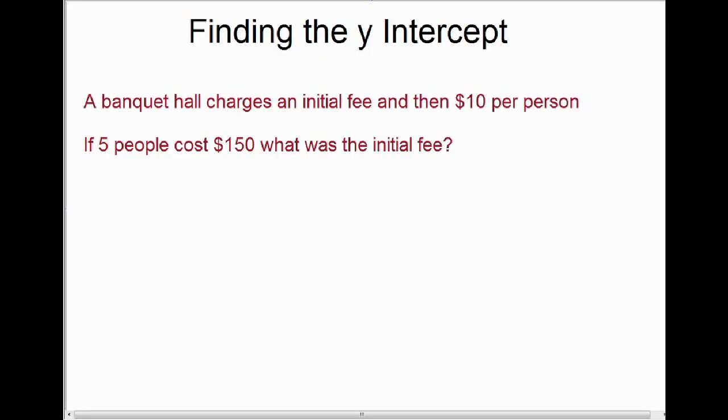The next thing we're going to talk about in analytic geometry is how to find the y-intercept. If you recall from the last video, the y-intercept used to be called our initial amount or our initial fee. So here we have an example of a question where we have to find the initial fee, which is our y-intercept.